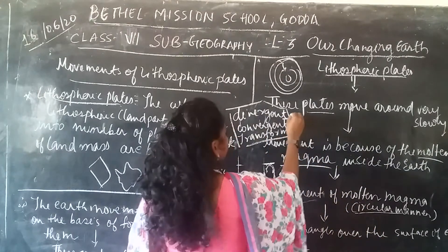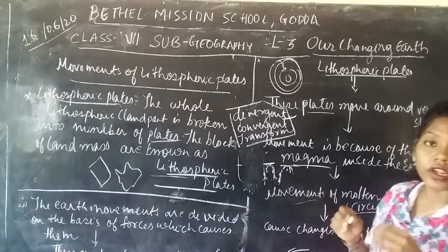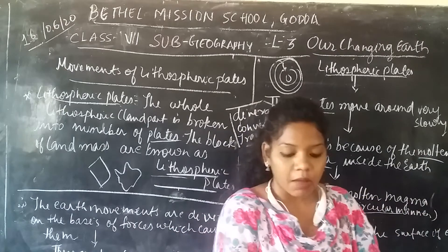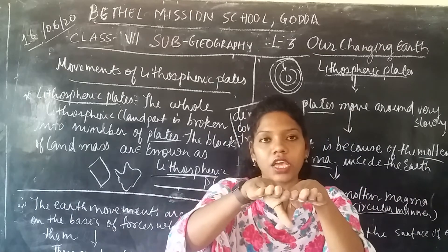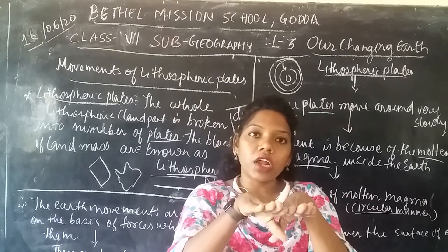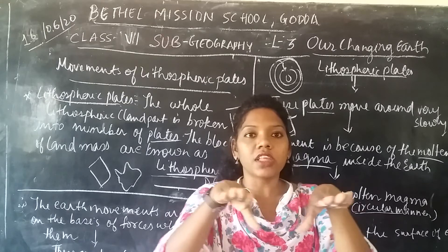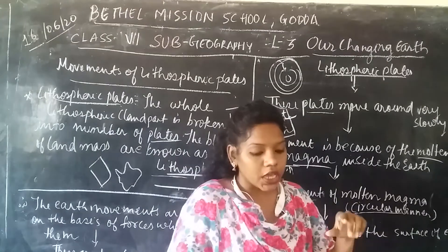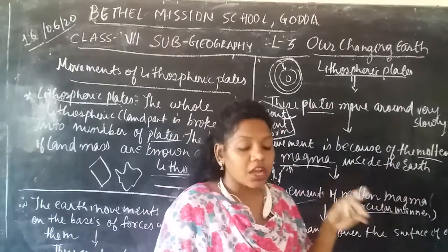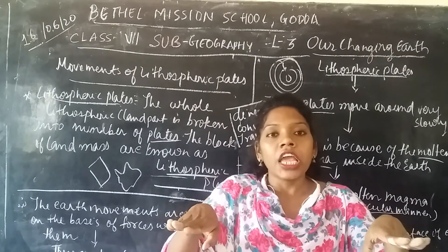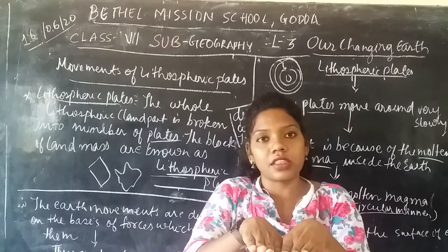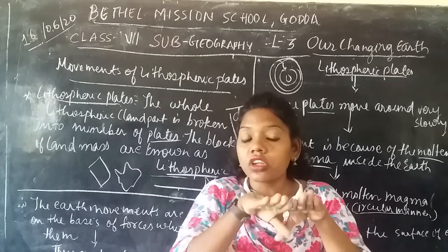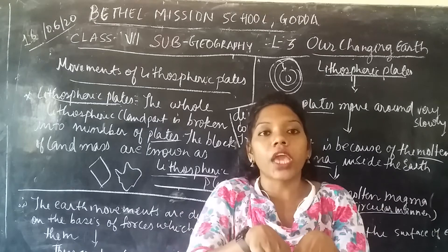Divergent means the plates move away from each other. For example, if two plates are joined together, due to the movement of the lithospheric plate, somewhere they move away from each other — that is divergent. Convergent means the plates move towards each other — from far apart they come closer together.